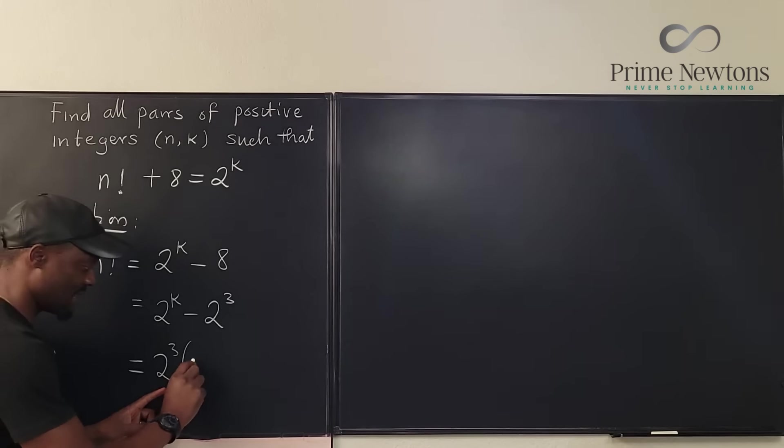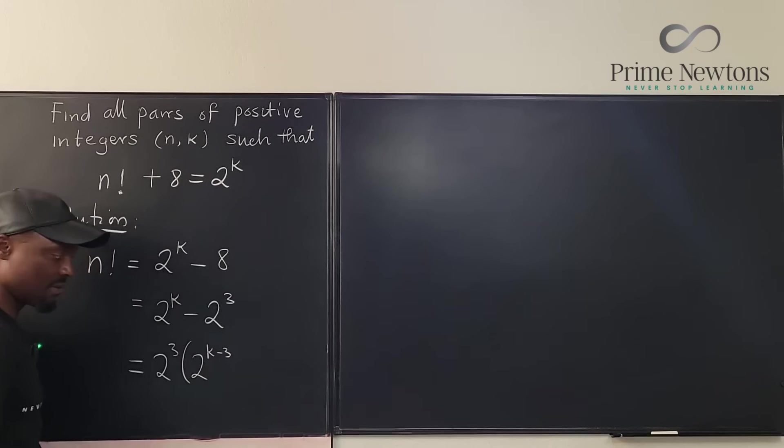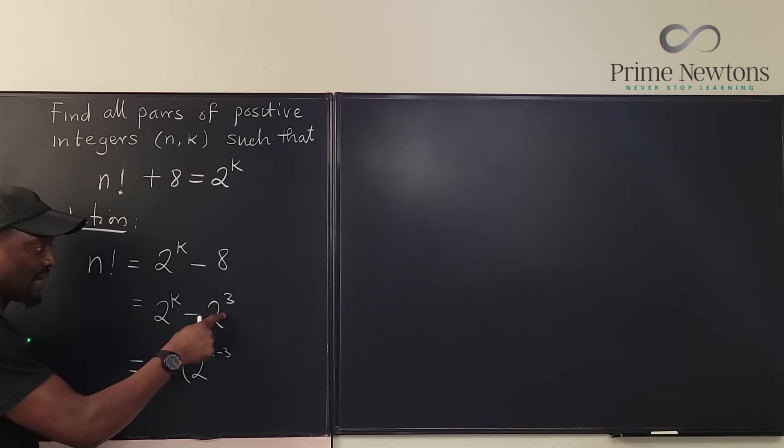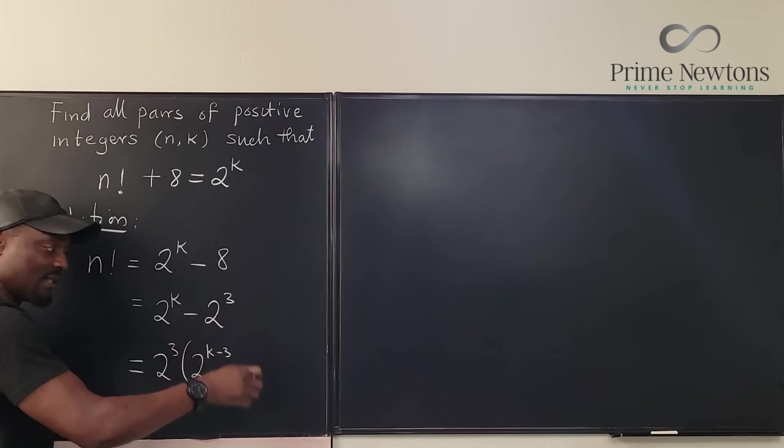I'm applying the laws of exponents. I get 2 to the k minus three when you divide this by this—you just subtract the exponents. And then if I divide this by itself, I'm going to get one. That's my n factorial.